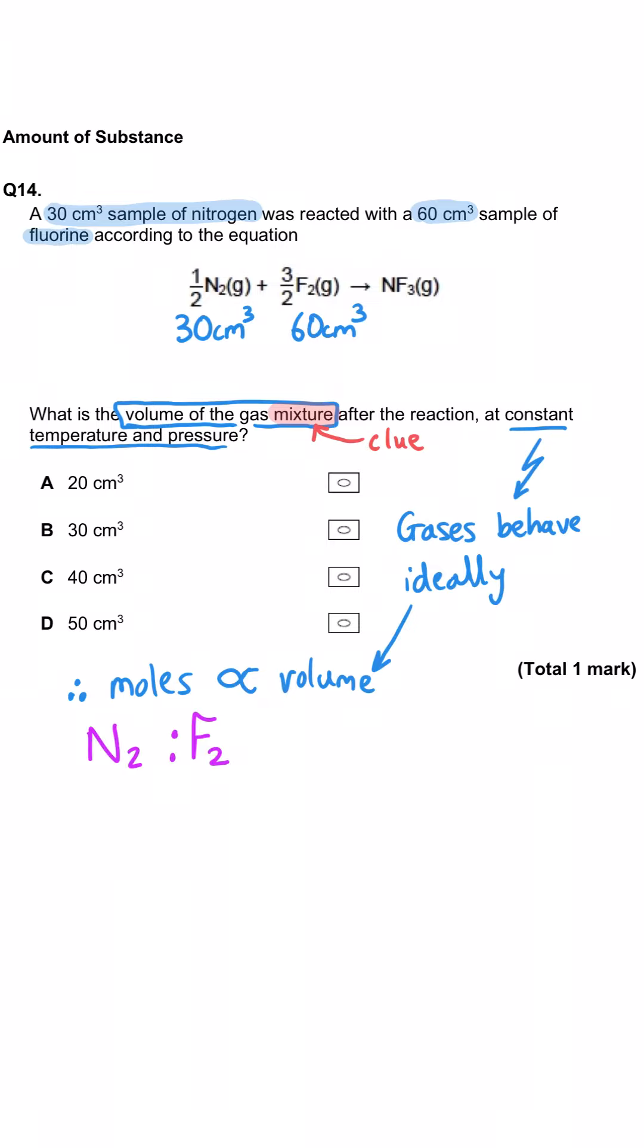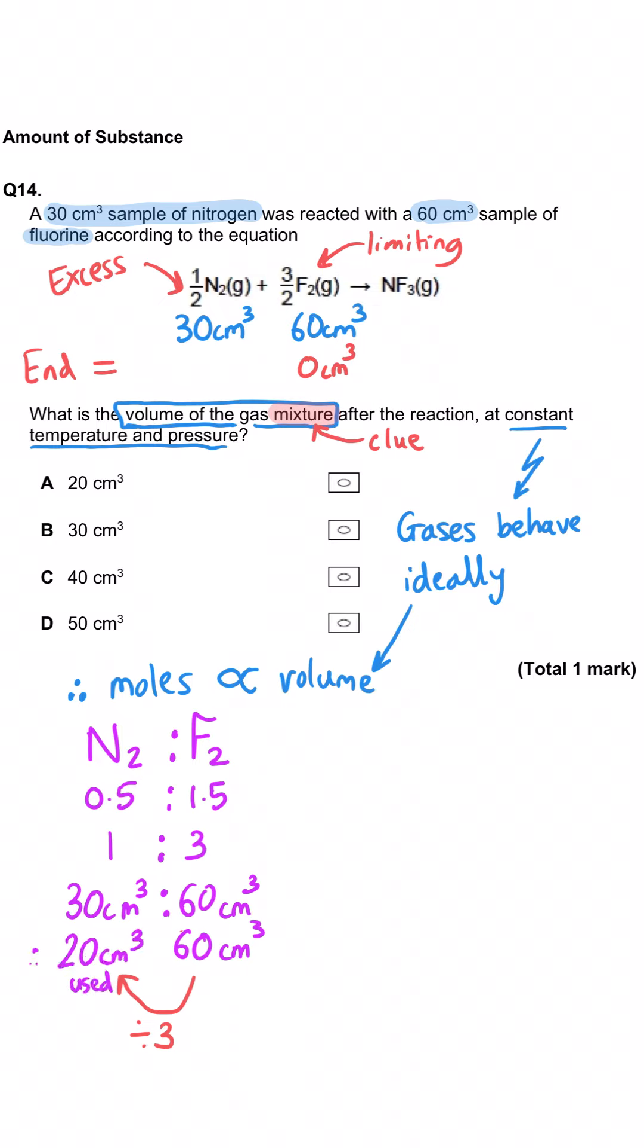When we look at the chemical equation, half a mole of nitrogen reacts with one and a half moles of fluorine. That means the moles of fluorine is three times bigger than the moles of nitrogen. If we've got 30 cm cubed of nitrogen, we would need 90 cm cubed of fluorine to react with that completely. We don't have 90 cm cubed of fluorine, we've only got 60 cm cubed, which means fluorine is the limiting factor and will all get used up. Working backwards, 60 cm cubed of fluorine would need three times less nitrogen to react. If we divide by three, we need 20 cm cubed of nitrogen.